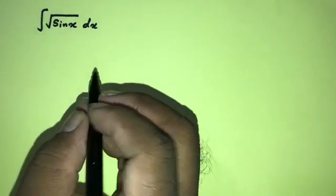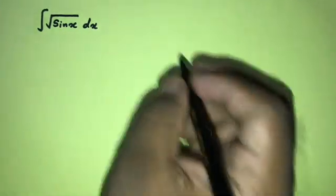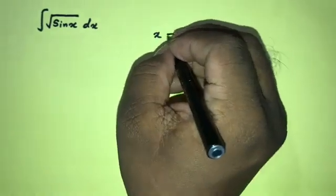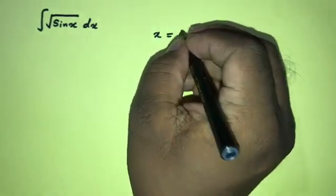Hi, welcome to the Mathematics channel. Today we are going to solve another interesting integral. First, I am going to take the substitution method, so if we take x equal to 5 over 2 minus u.